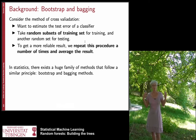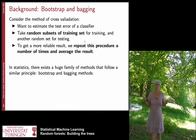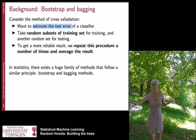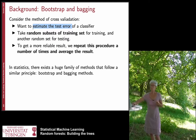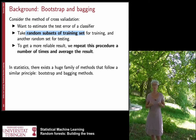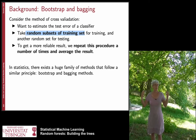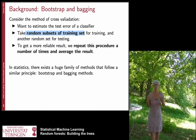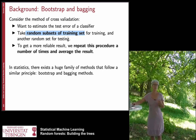The background from statistics where this comes from is the field of bootstrap and bagging. As an example, we have seen something similar already — the method of cross-validation. In cross-validation, we want to estimate the test error. We take random subsets of our training set for training and another set for testing, do this a number of times on independent splits, and average the result, hoping the estimate is better than taking just one such split.